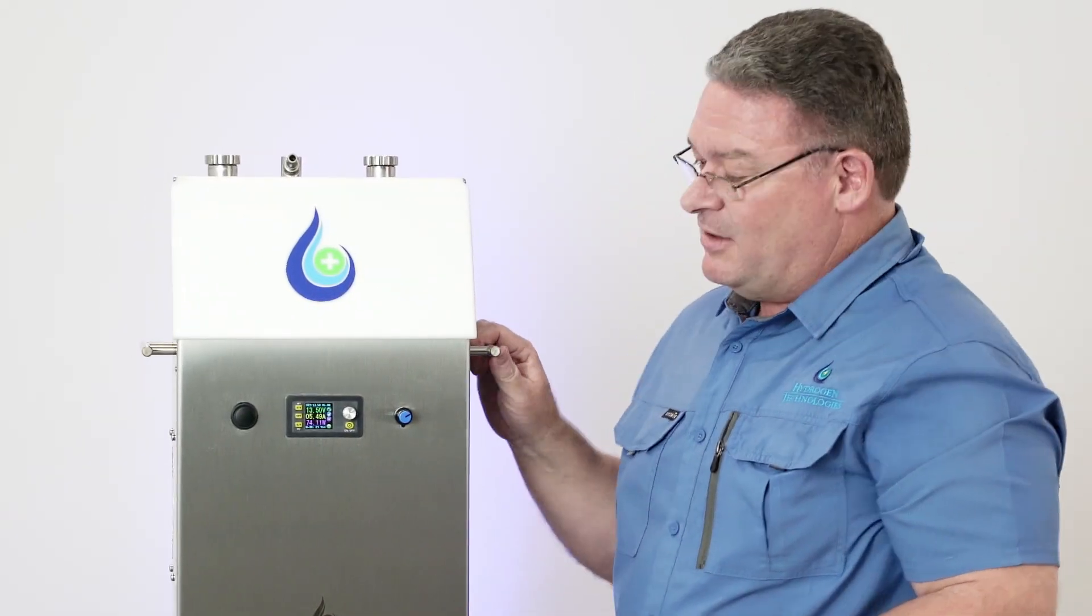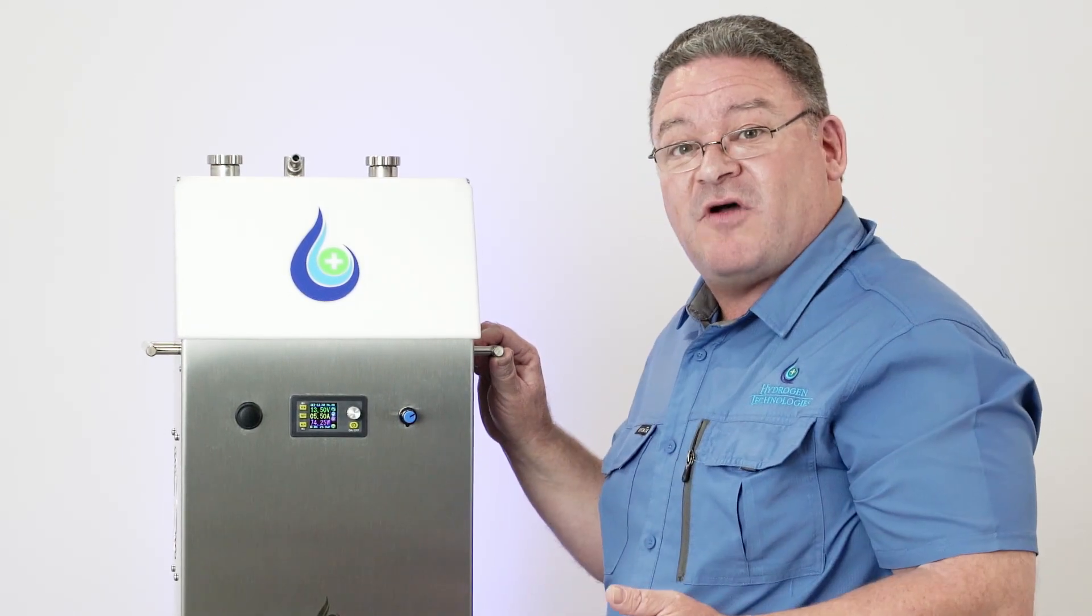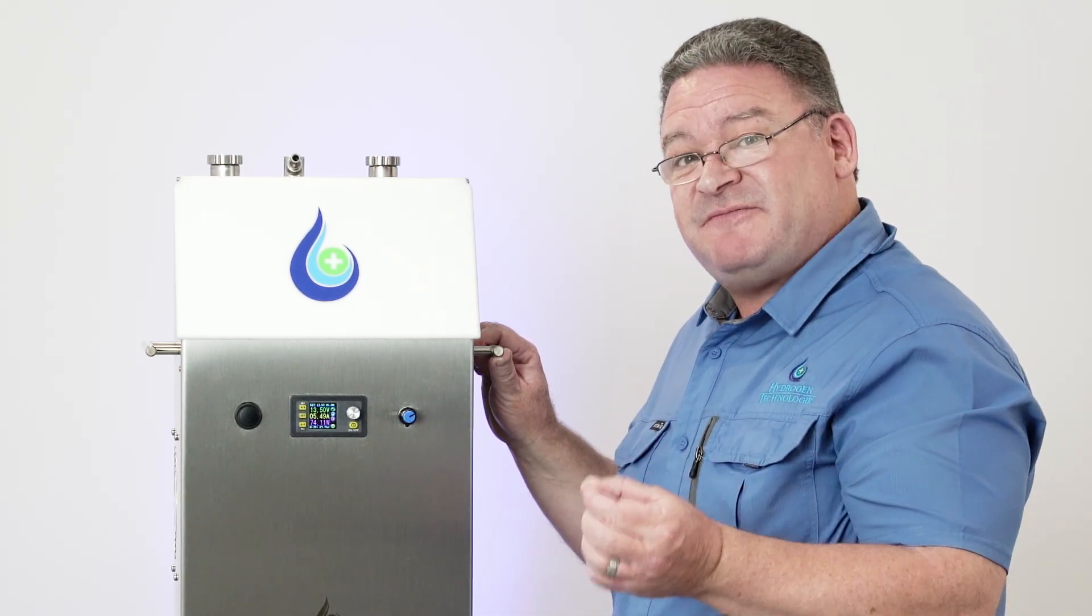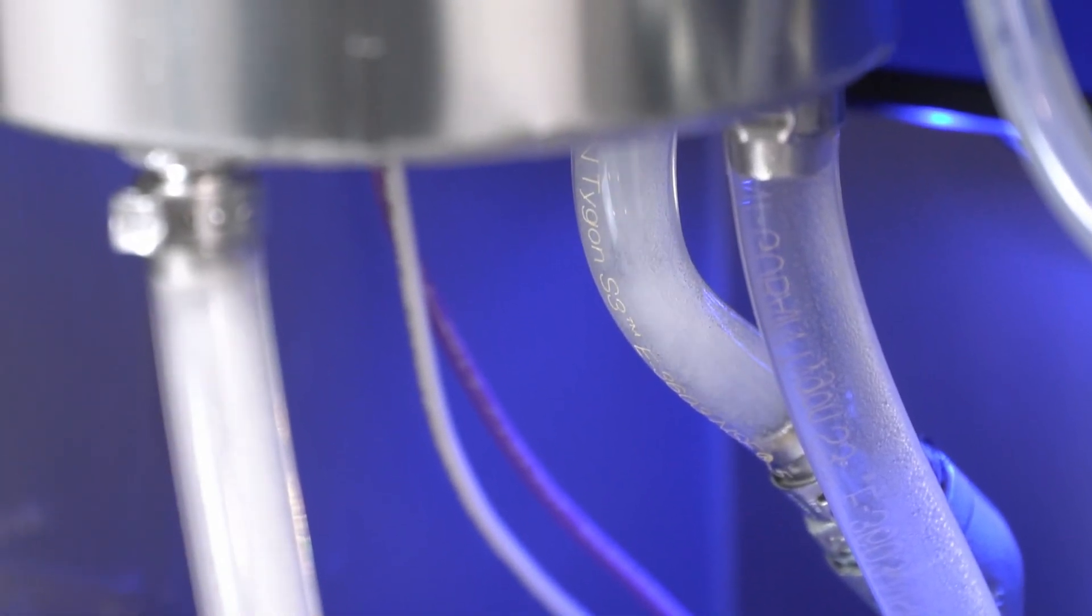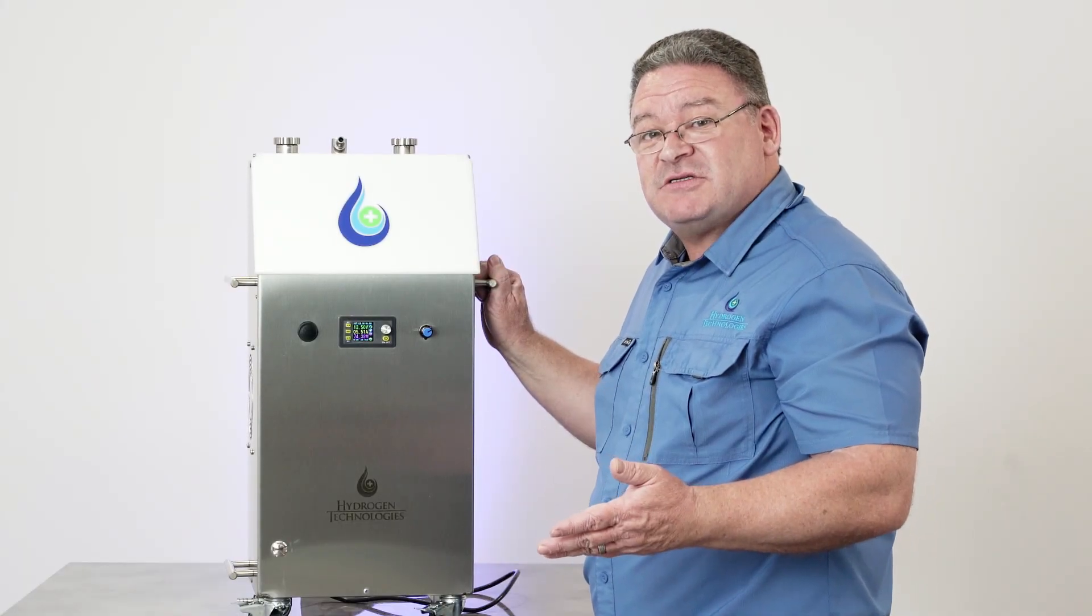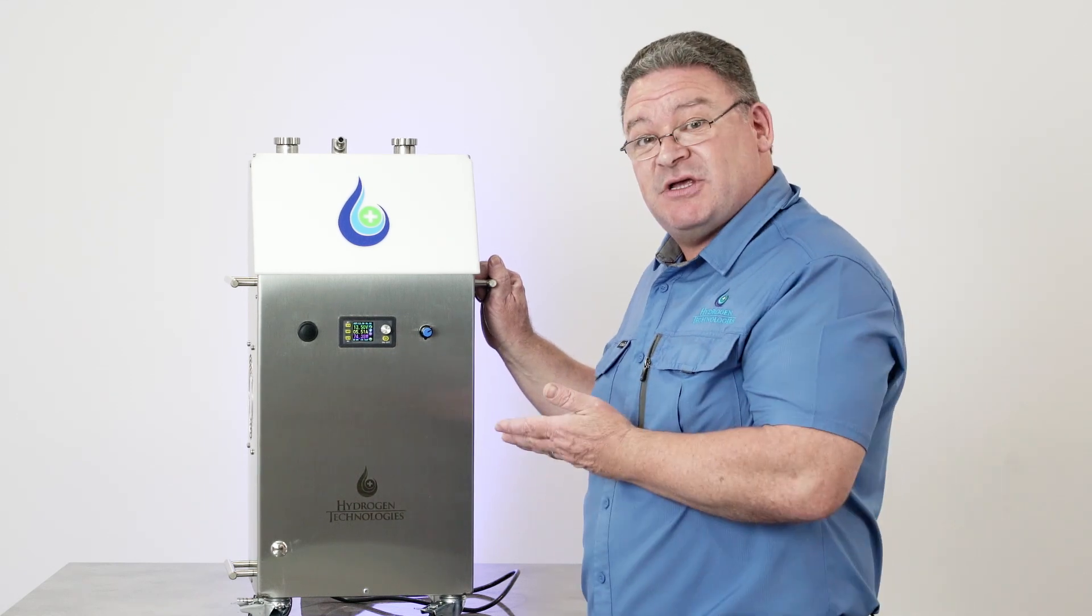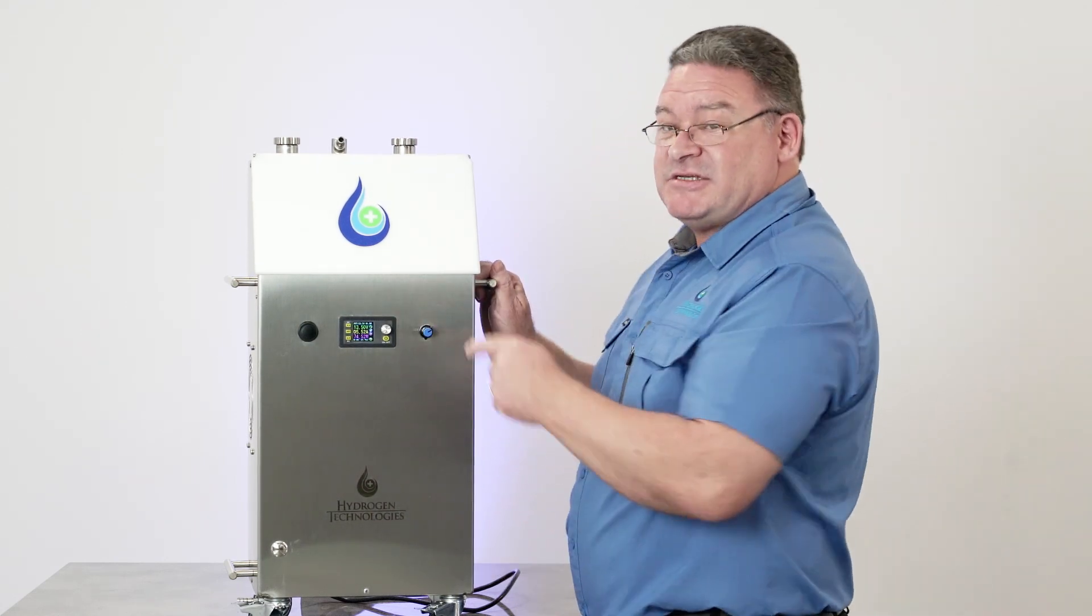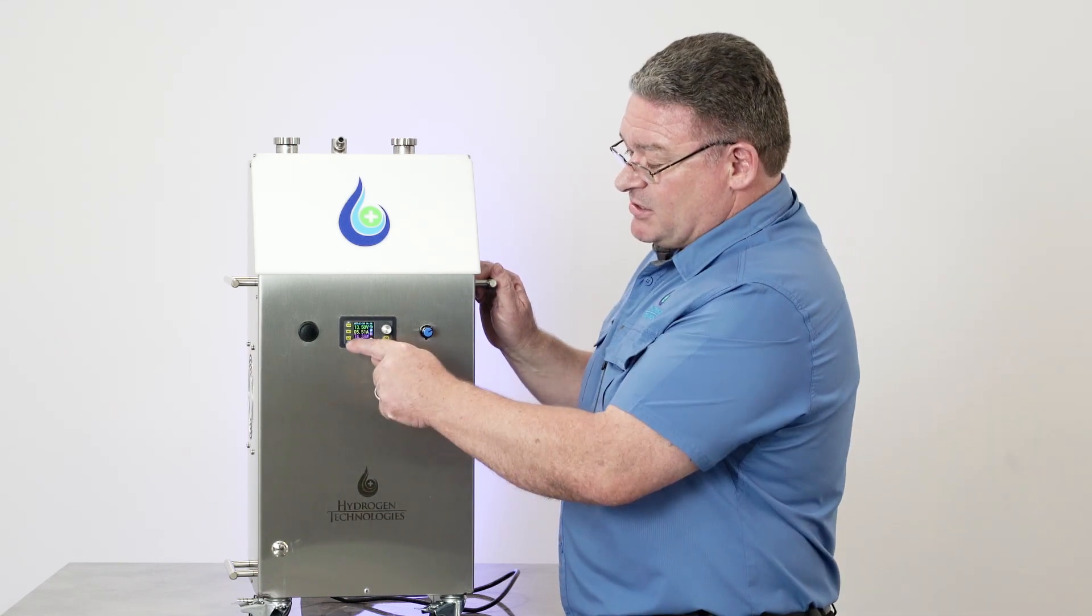In saying that though, there are some parameters that you might be able to change depending on the clinical environment that it may be used in. A lot of professional people use these machines and they may have some very specific volumes of gas that they would like to give to their recipients. So we can simply turn this machine down as well. It's very versatile. The voltage, as I said, is preset because of the configuration of the plates inside the machine. The amperage is something that we can change.